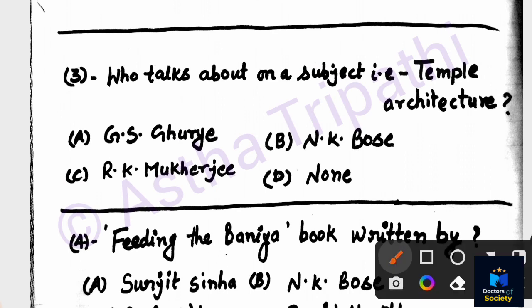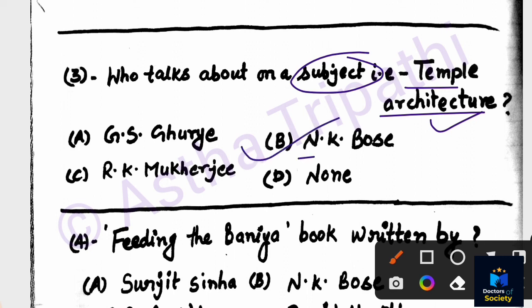Question number three: Who talks about temple architecture? Temple architecture refers to the art and construction of temples. Options are G.S. Ghurye, N.K. Bose, Archie Mukharji, and none. N.K. Bose is the correct answer — option B. N.K. Bose worked on the subject of temple architecture.